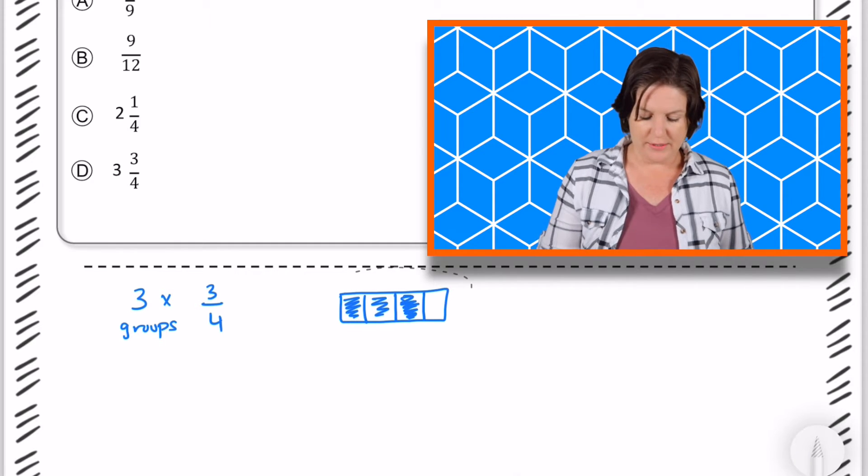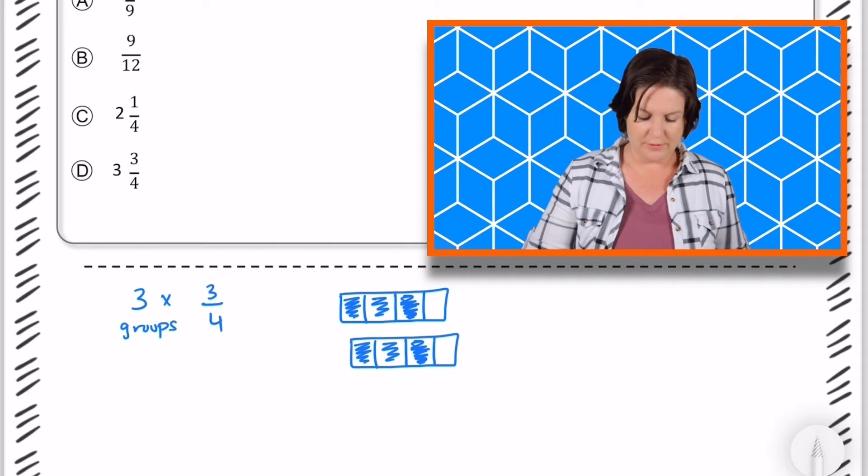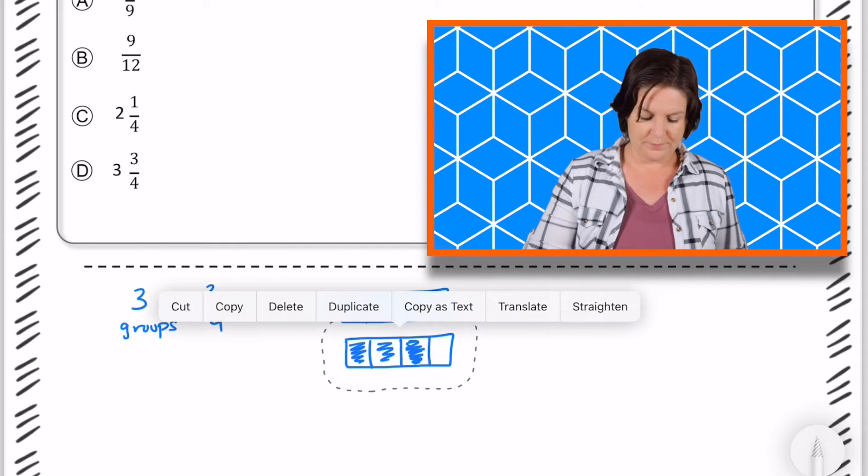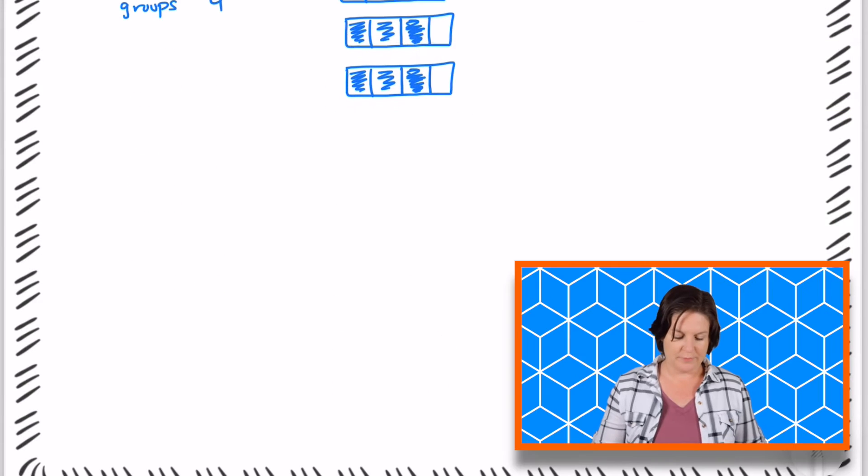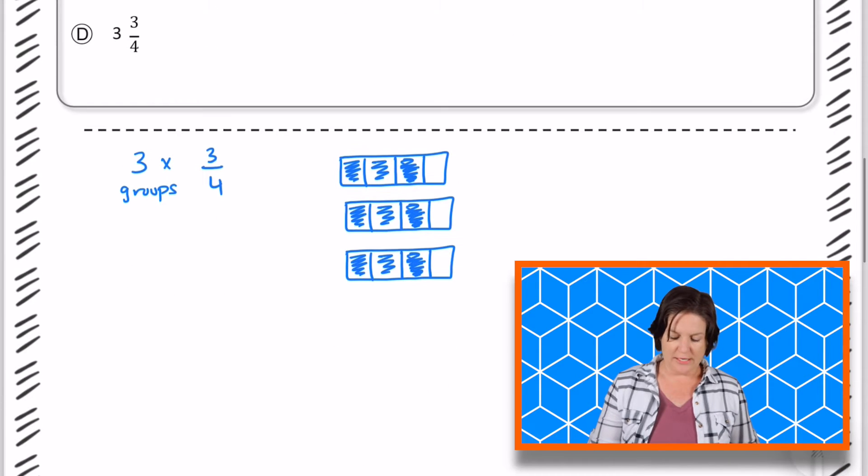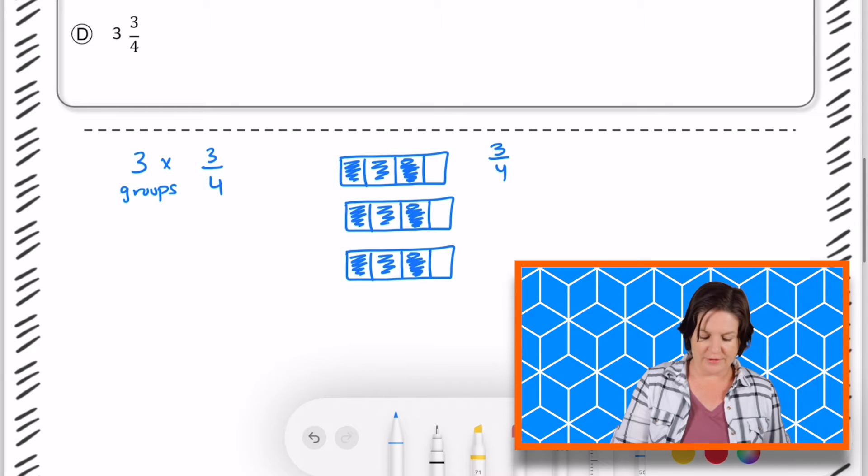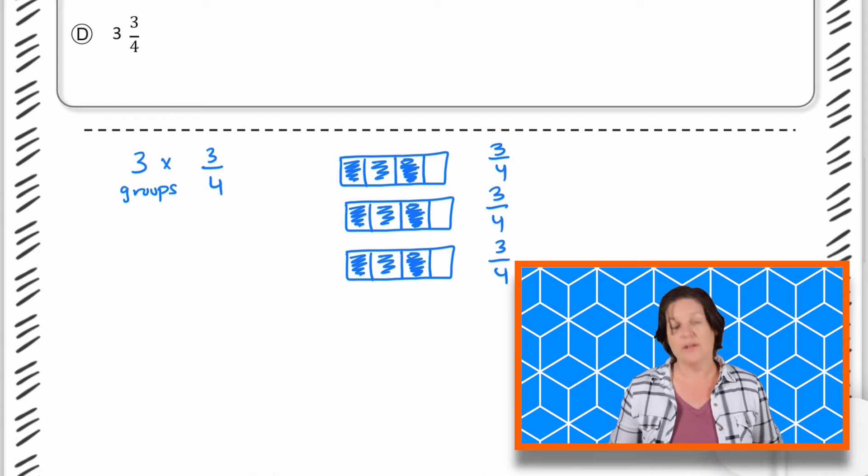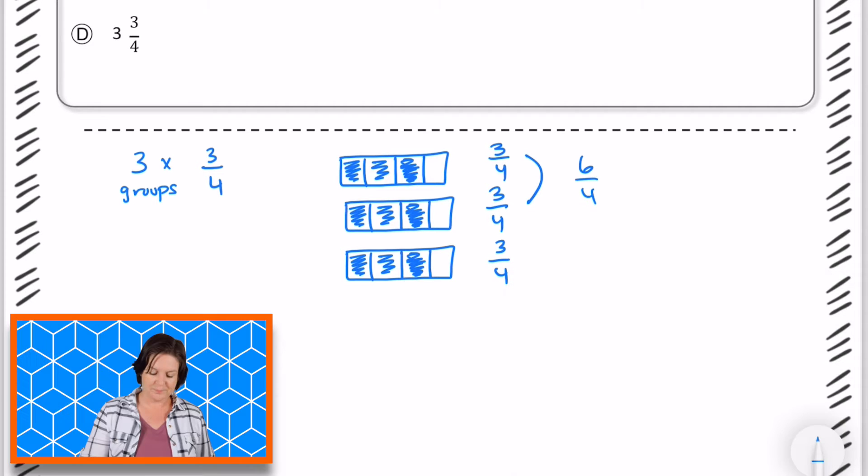Okay, and because we have that three in front, that means it's happening three times. There we go. Okay, so now that means I have 3/4 here, 3/4 here, and 3/4 there. 3/4 plus 3/4 is 6/4, and 6/4 plus 3/4 equals 9/4. Is that an answer choice?